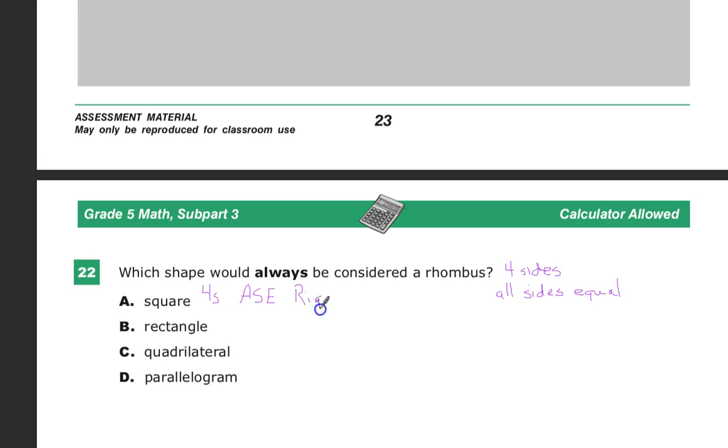And right angles. All the vertices are right angles. And we'll say all these are equal. That's what makes it square. So the answer to this one is actually A.